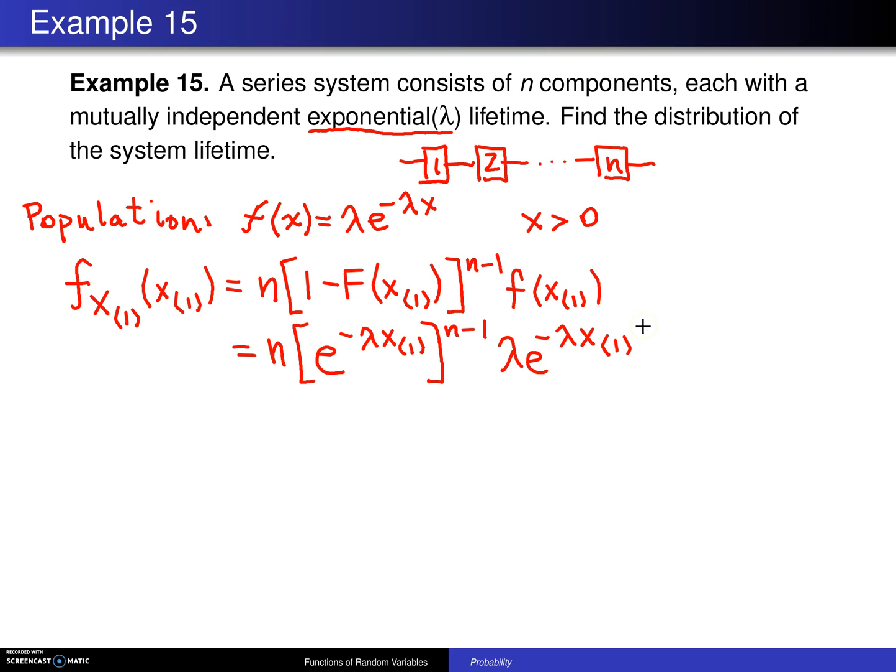You can do a little bit of simplification here. Notice that there is an n and a lambda, so that's a constant value, n times lambda, and then we have e to the minus lambda x1 to the n minus 1 power multiplied by e to the minus lambda x1. This becomes, when you add all those pieces up, e to the n lambda times x1, and this is for x1 on the support, which is x1 greater than 0.